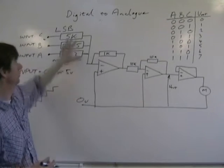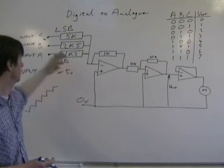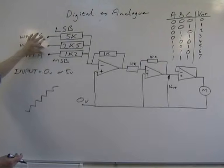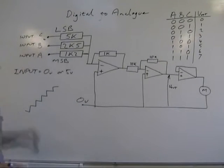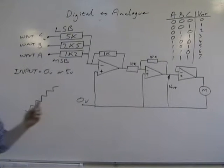The other disadvantage is you've got to use this summing amplifier, which takes up quite a bit of space. You're also using three outputs from your microcontroller. If you're using pulse width modulation, you're only using one output from your microcontroller.